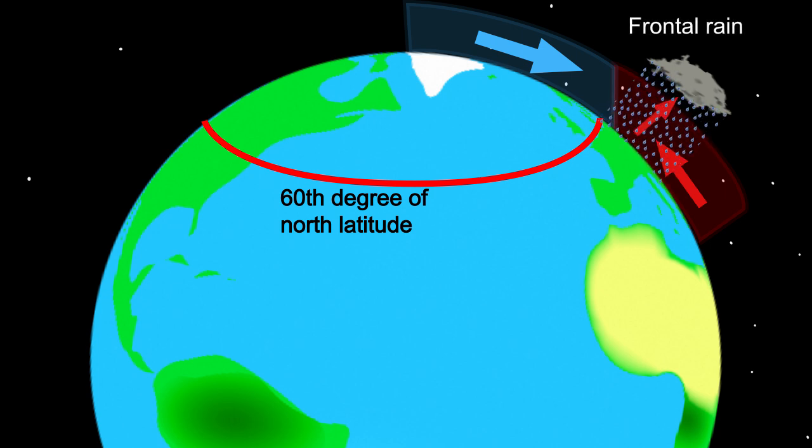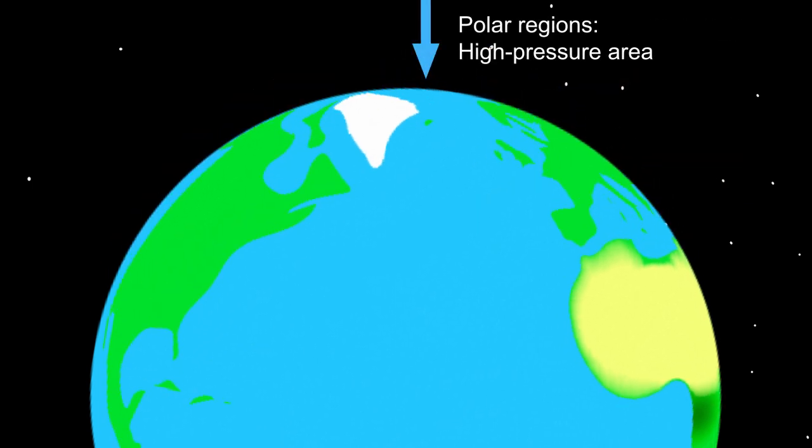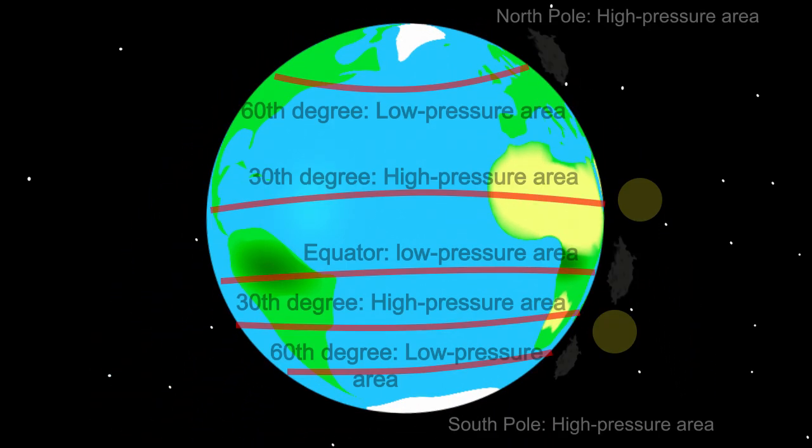In the polar regions, there is again a high pressure area. This causes falling air, so there is not much precipitation in the polar regions. Moreover, the air is cold, so there is little water vapor in the air.